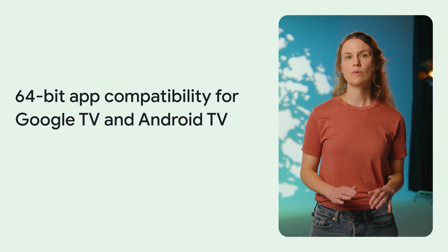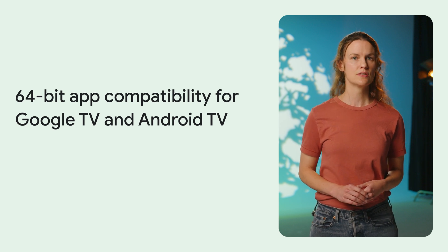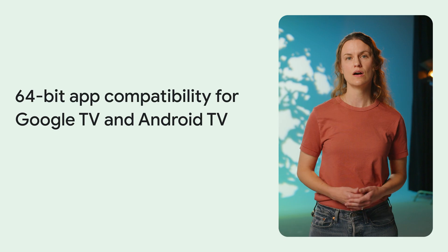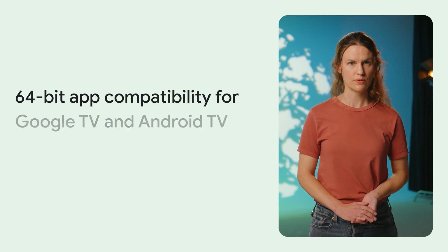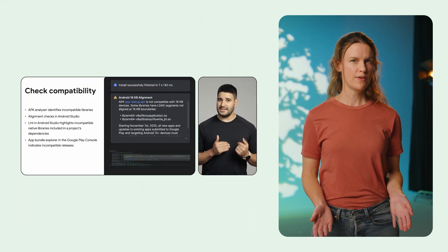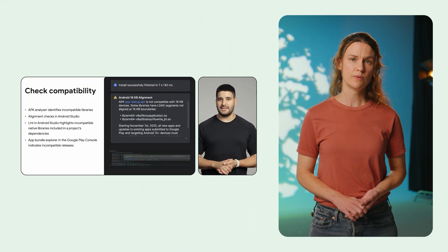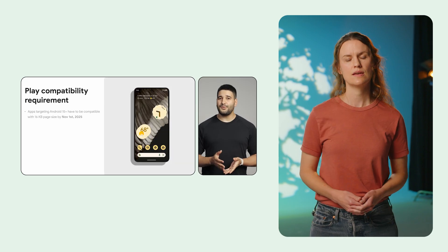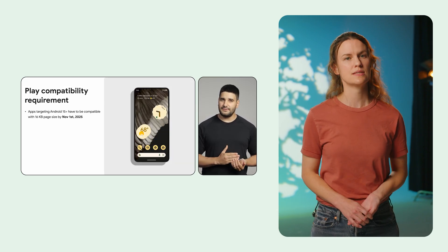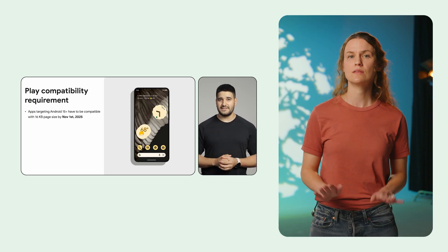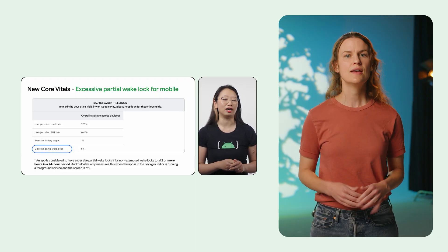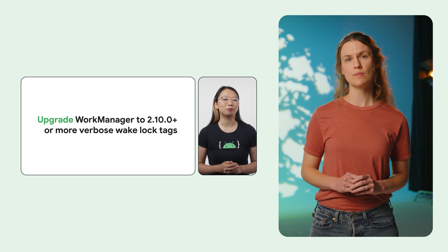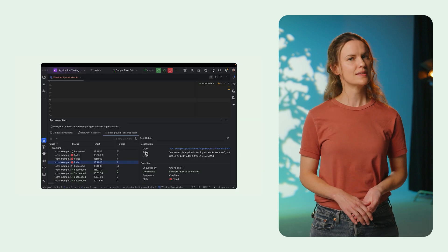Google TV and Android TV will require 64-bit app compatibility to support upcoming 64-bit TV devices starting August 2026. This requirement only impacts apps that utilize native code. By November 1st, 2025, apps targeting Android 15 or later must be compatible with 16 kB page sizes. Yasin discusses how to migrate to 16 kB page sizes for faster launches and lower power consumption. Alice explains that the Play Console monitors and flags apps for excessive partial wake-lock usage, discusses how developers should use WorkManager to avoid manual wake-locks, and testing and debugging strategies.